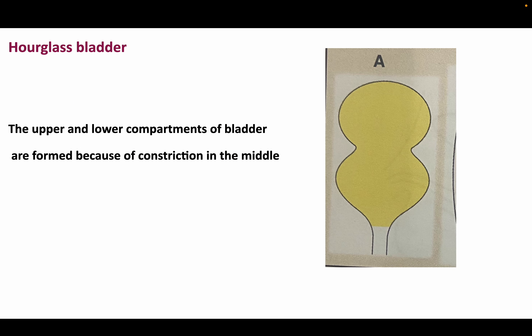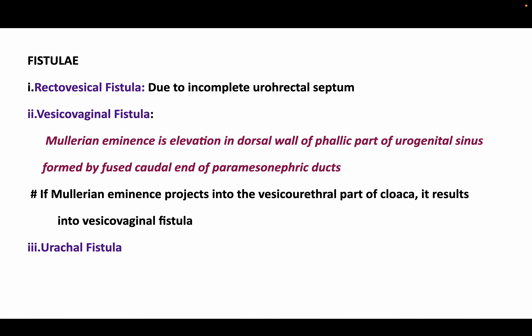The second anomaly is hourglass bladder, where upper and lower compartments of the bladder are formed due to constriction in the middle. Various fistulae can appear: rectovesical fistula due to incomplete urorectal septum, and vesicovaginal fistula — the Müllerian eminence is an elevation in the dorsal wall of the phallic part of the urogenital sinus formed by the fused caudal end of the paramesonephric duct; if it projects into the vesicourethral canal it results in vesicovaginal fistula. There is also urachal fistula.